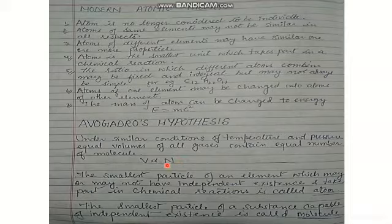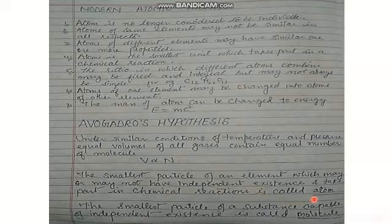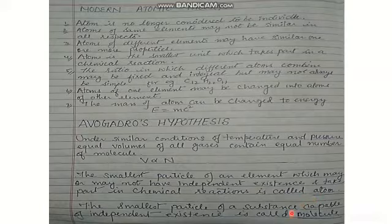The smallest particle of an element which may or may not have independent existence and takes part in a chemical reaction is called an atom. An atom is no longer considered the smallest indivisible particle. The smallest particle of a substance capable of independent existence is called a molecule. For example, hydrogen exists in the form of H2 — that molecule has independent existence, whereas individual hydrogen atoms do not have independent existence.